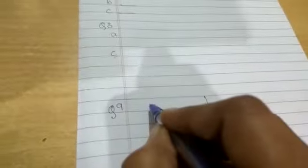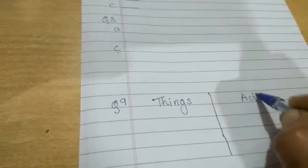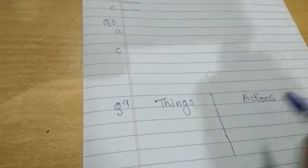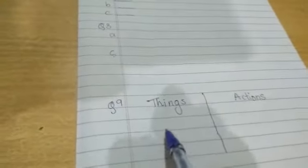Now children, the last question, question number 9. Put these words in the correct boxes. There what you have to do is, question 9, what you have to do is make two boxes. You have to draw a line and make two boxes. There one side you will write things and one side you will write actions. Whatever things or actions are given from the box, you will pick it and you will write under the heading.